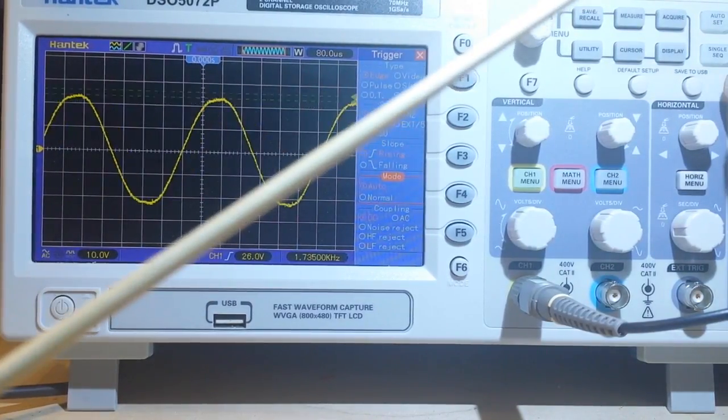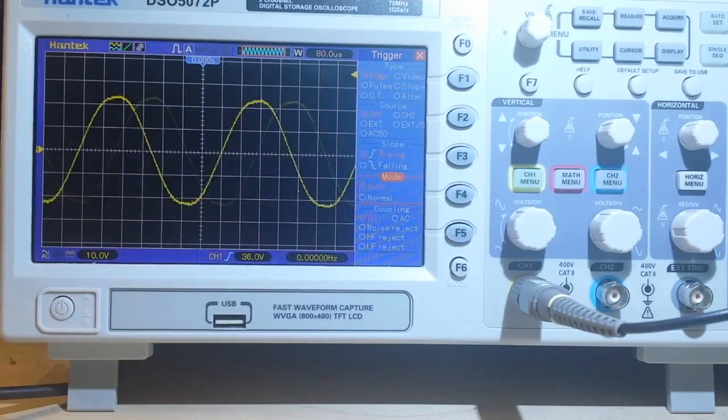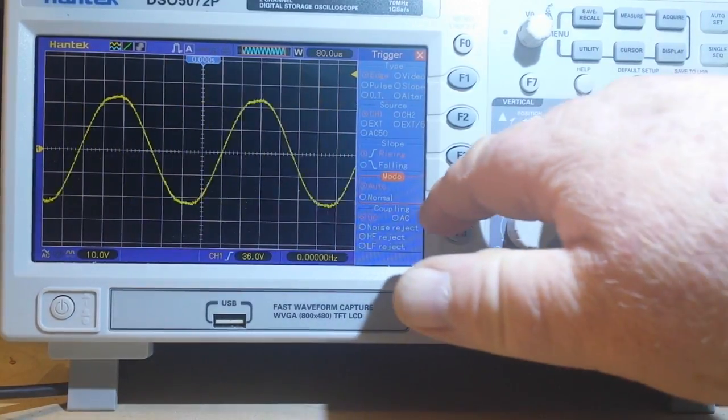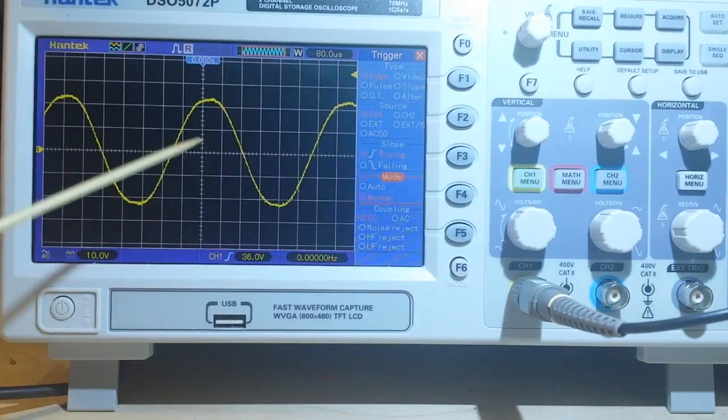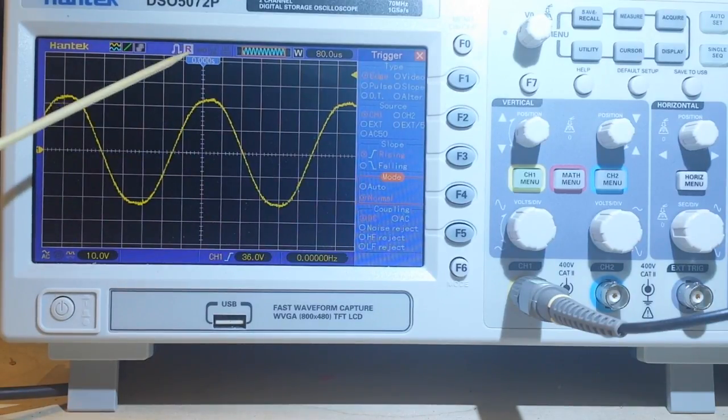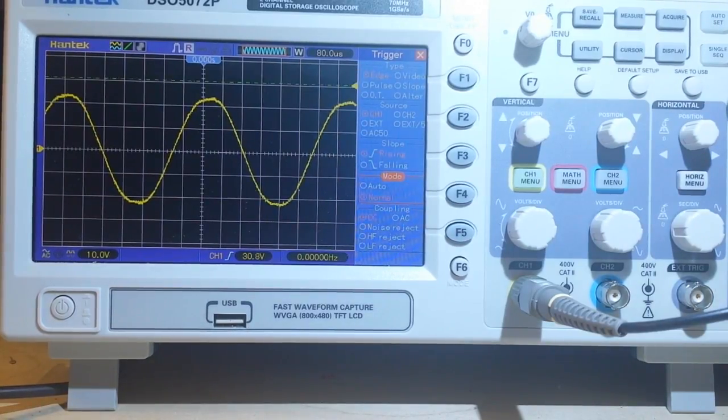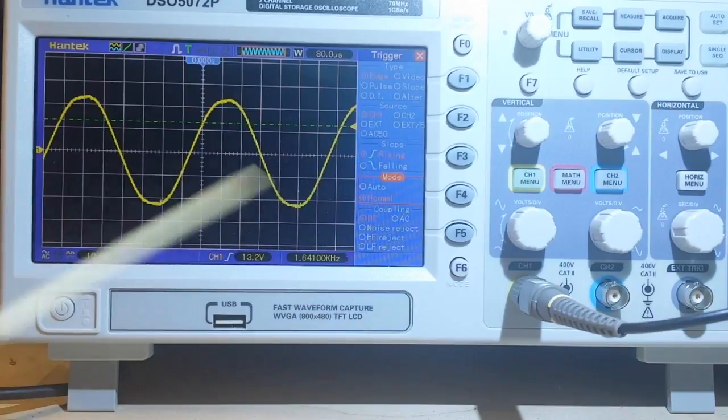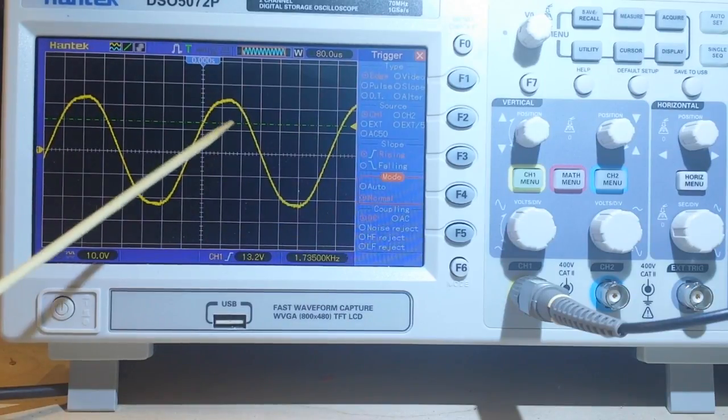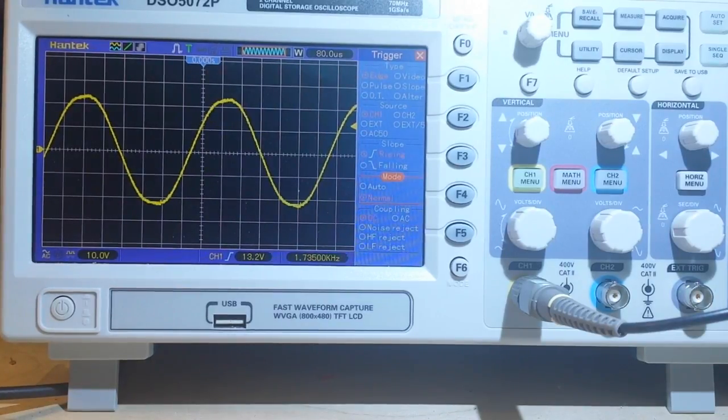I'm going to move the trigger level outside. And you can see we are still triggering. But if I switch this over to normal mode, it simply stays on the last waveform that was on the screen and it does not trigger. You can see we're not triggering here. Until the signal falls within the realm of the waveform. Now we're triggering because our trigger level is back inside the realm of the waveform. So that is edge triggering.